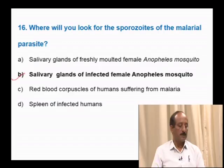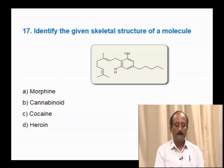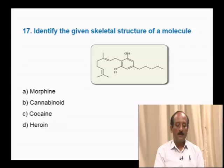Question number 17: Identify the given skeletal structure of a molecule — morphine, cannabinoid, cocaine, heroin. The given skeletal structure of a molecule is a cannabinoid drug. The correct answer is option B.